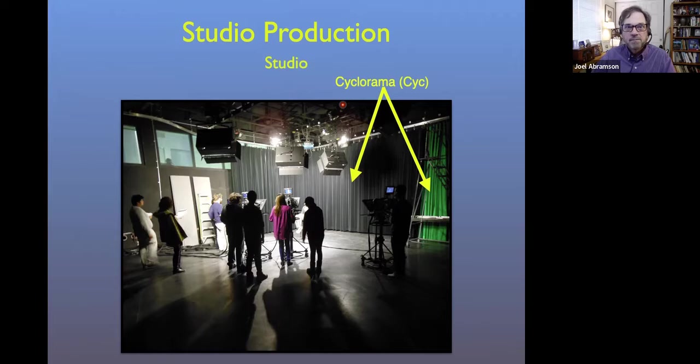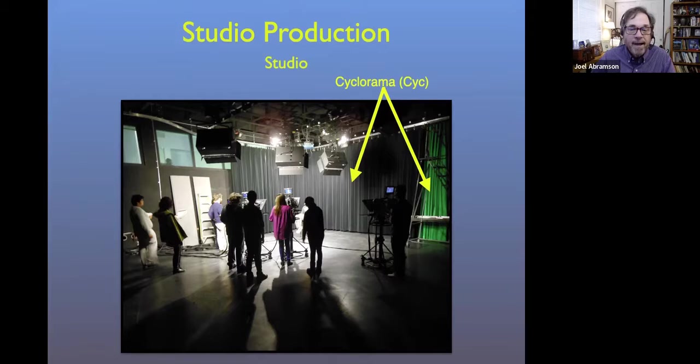We start with different definitions and different places in our studio production. Here's our studio, and I'm pointing out the two different cycloramas — the two different psychs. We've got a black one and a green one. Somewhere back there we have a mauve colored one that's a little whiter. And then we have a hard psych off to the side that is green also.